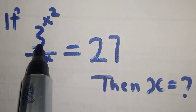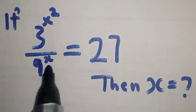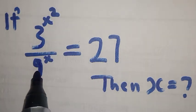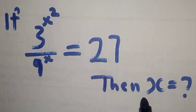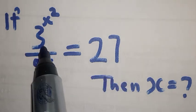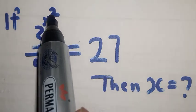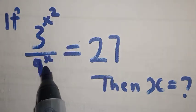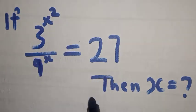If 3 raised to power s squared over 9 raised to power s is equal to 27, then s is equal to what? We are asked to find the value of s.